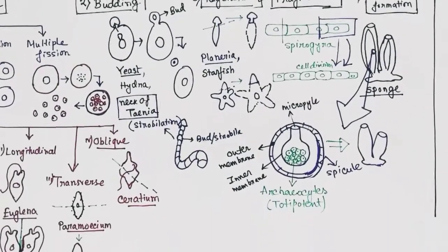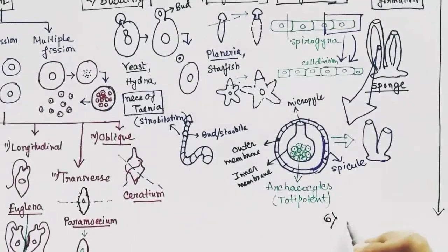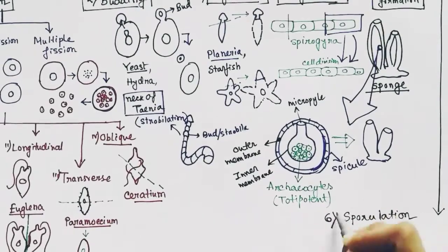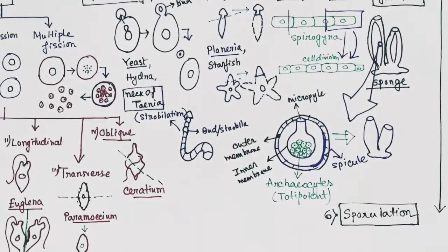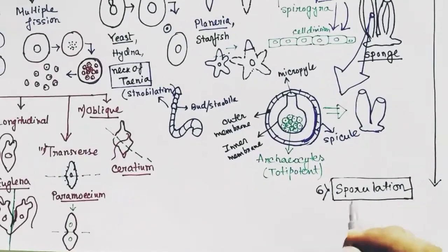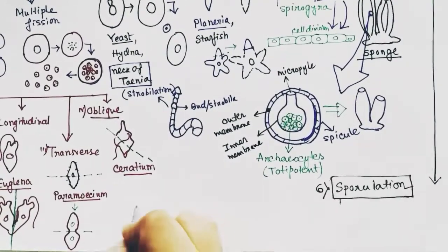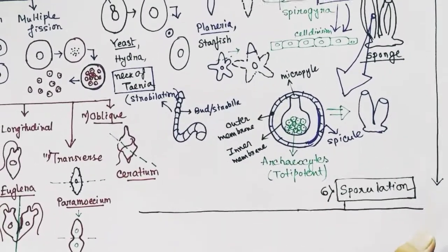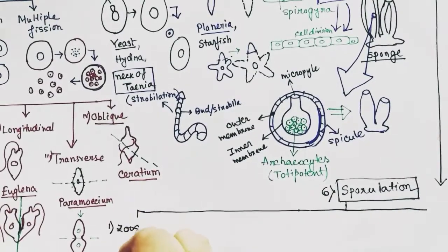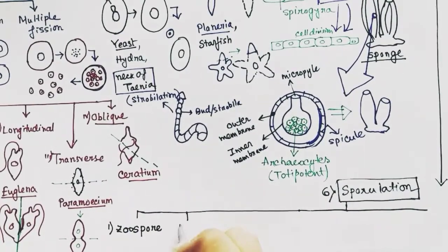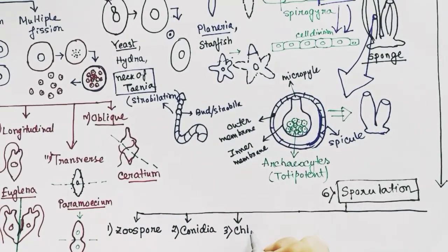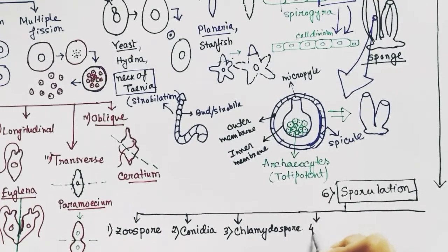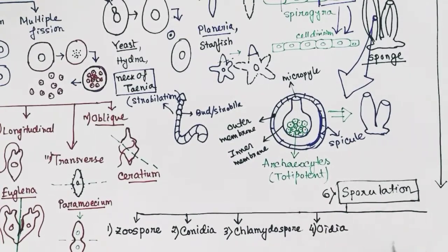The sixth type of asexual reproduction is sporulation, that is spore formation. Spores can be of different types. Here we will talk about a few: zoospores, conidia, chlamydospores, and oidea spores.